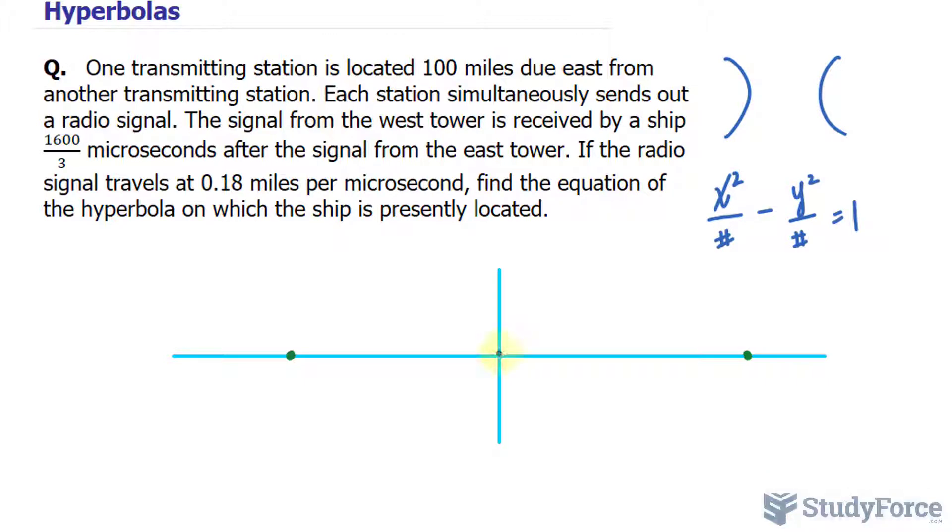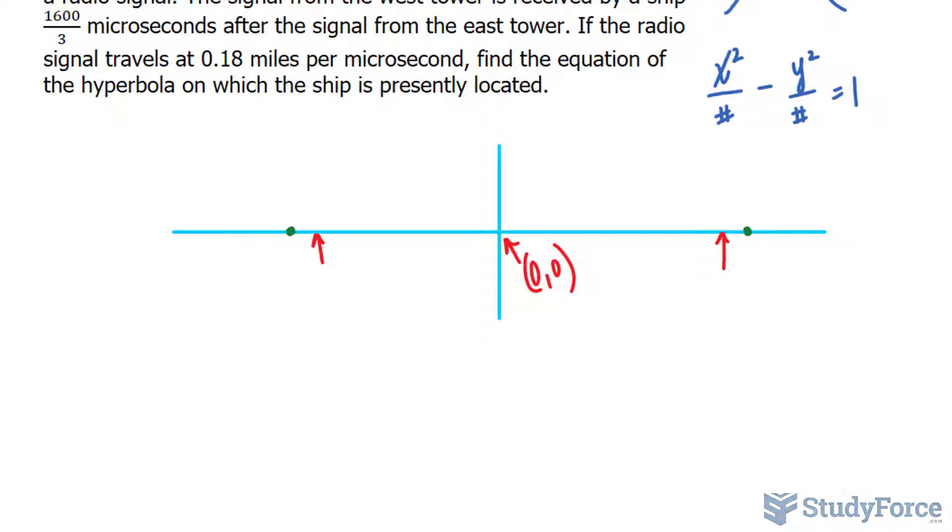The term up here is y squared over a number that we are looking for is equal to 1. Now, because we have a center that is at the origin, that actually helps us quite a lot because this point and that point represent the focus. The focus is where the signal is sent out from, not from the vertex.